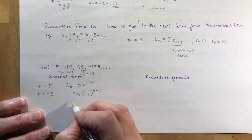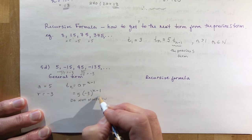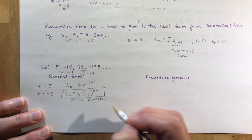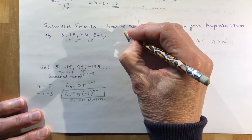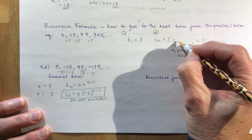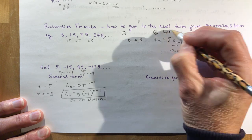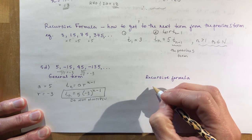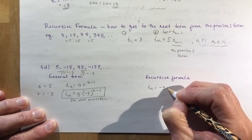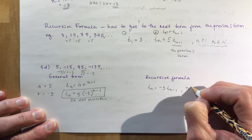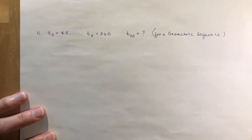The general term is: tn equals 5 times negative 3 to the power of n minus 1. Do not multiply these — that's an exponent law. For the recursive formula: t1 equals 5, and tn equals negative 3 times tn minus 1, where n is greater than 1 and n is an element of natural numbers.